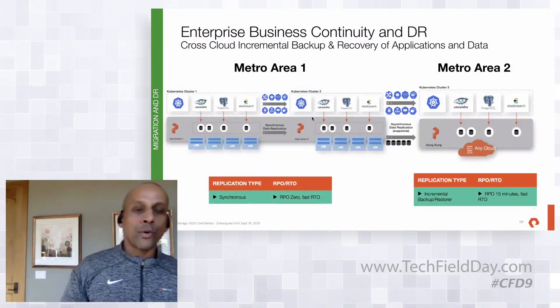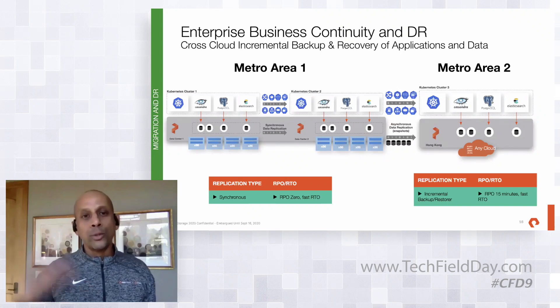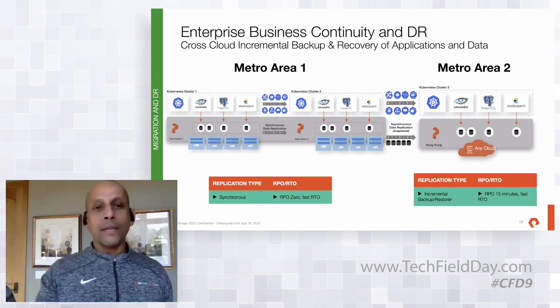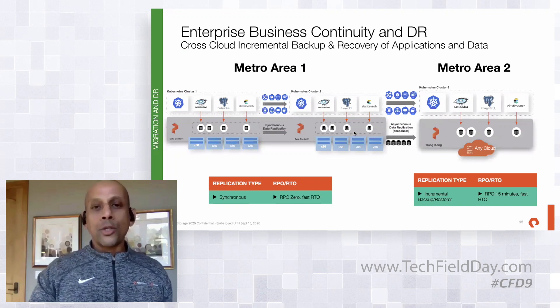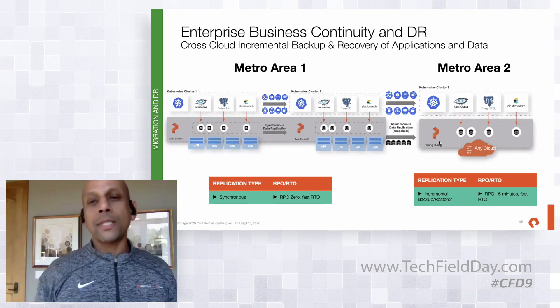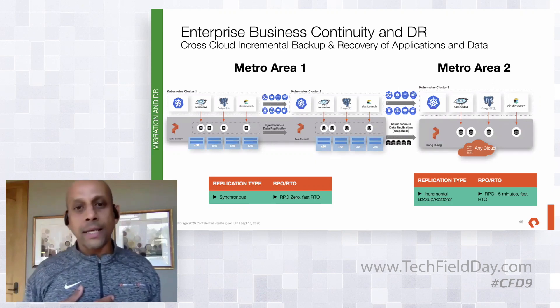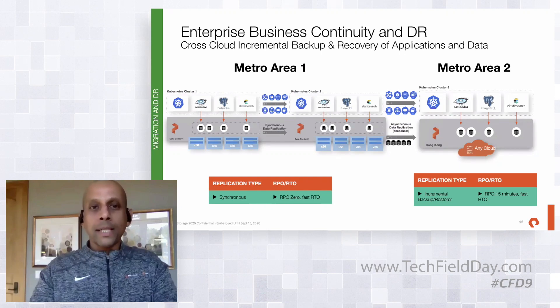If you're running your Kubernetes clusters within a single data center or within metro distance, you can stretch the Portworx cluster to provide storage for multiple Kubernetes clusters. This allows you to do things like blue-green deployments, or if one data center goes down, immediately failover with an RPO of zero to your secondary data center. You can also use this technology to asynchronously replicate data across data centers — many users run an on-prem data center and asynchronously replicate data to the public cloud.